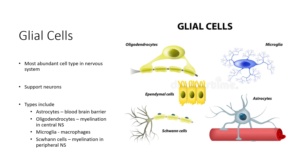Oligodendrocytes are glial cells involved in forming myelination for axons in the central nervous system. Microglia are microphages, and Schwann cells are involved in myelination of axons in the peripheral nervous system. And that is everything for histology.